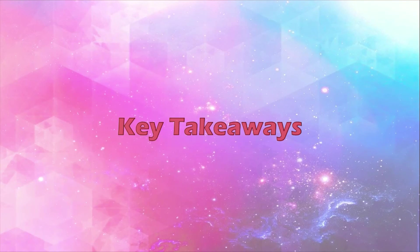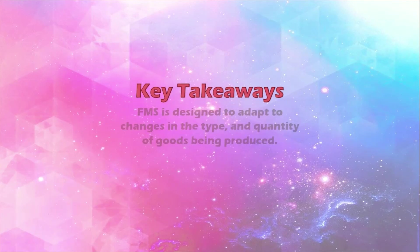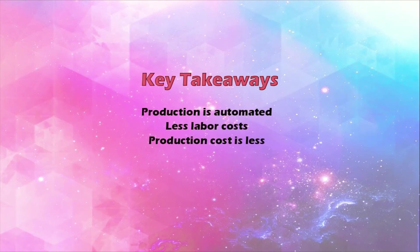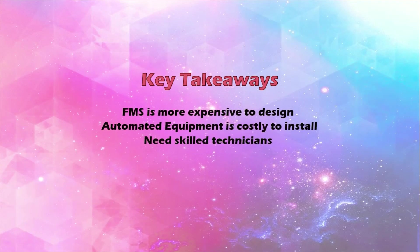Key takeaways: A flexible manufacturing system is designed up front to be readily adapted to changes in the type and quantity of goods being produced. Production is largely automated, reducing overall labor costs and production cost. An FMS system is, however, more expensive to design and to install, and requires skilled technicians to keep it running.